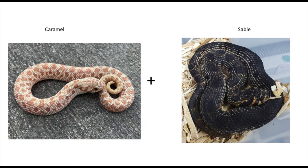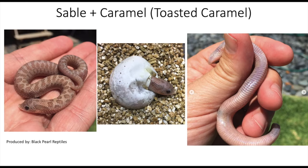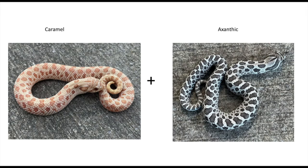Let's move on to combining the caramel gene with recessives. We're going to start with the sable gene. The sable caramel is called a Toasted Caramel — this was also in my sable video. Very cool looking snake.